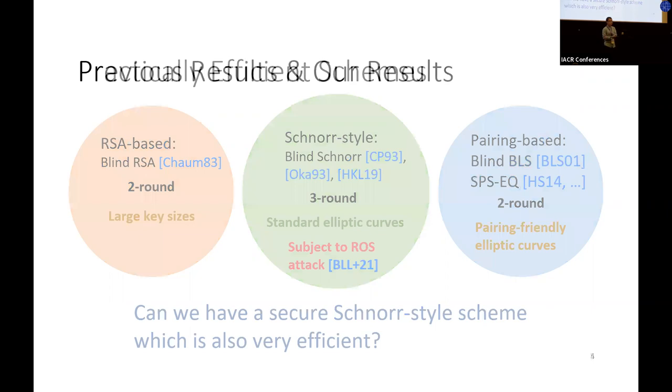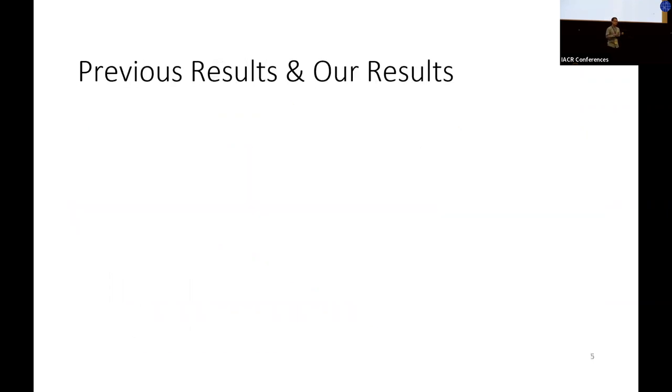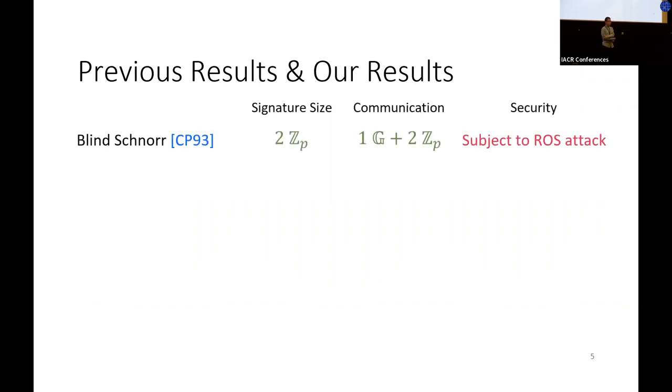Of course, we're not first to ask this question, so let me tell you a little more about related works and how our result is a substantial improvement over the state of the art. The original blind Schnorr was proposed by Chaum and Pedersen in 1993. It's the most efficient: signature size is just two scalars and communication complexity is one group element plus two scalars. However, as I mentioned, the scheme is actually broken.